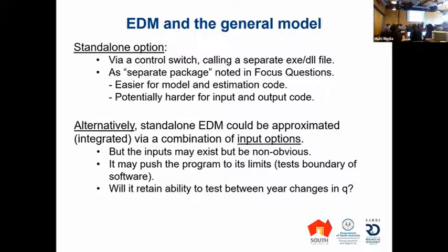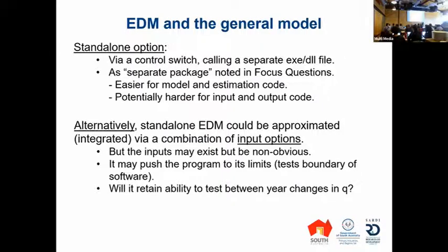In terms of the general model, it would be straightforward to apply it as a standalone executable file and just call it up — you wouldn't have to worry about coding the dynamics. But then you'd probably need more communication between output and input files for the rest of the model. It should also be possible to do this using the existing inputs of a general model. Because this model is so simple, it might actually test the software since it probably doesn't normally get applied to something this simple. You'd also be able to retain things like testing individual years for catchability, and a few other features from the 2017 paper that might break as well.